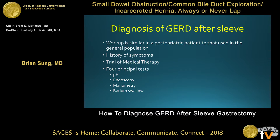How do we diagnose patients with reflux after sleeve? It's no different — the workup is essentially the same as in the general population in the post-bariatric patient. Start with a good history and clinical presentation: typical symptoms of heartburn and regurgitation versus atypical symptoms of cough, chest pain, asthma, and hoarseness. You can start with empiric therapy with a trial of PPI — a very sensitive but not very specific test. The mainstay is going to be the four principal tests: pH monitoring, upper endoscopy, manometry, and barium swallow.